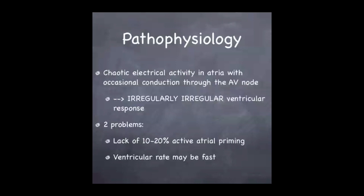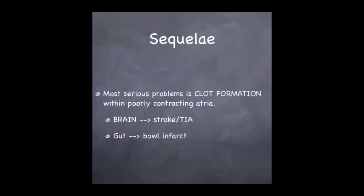The other problem is that conduction through the AV node may be very fast, leading to fast AF, and this may, particularly with individuals with hearts that have other pathologies, cause ischemia or failure. Most importantly, clot formation tends to occur within the poorly contracting atria. The most common site for embolization of this clot is to the brain, leading to a stroke or TIA, but it can also occur to the gut, leading to a bowel infarct.